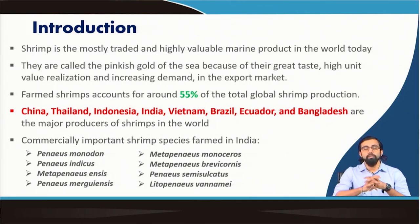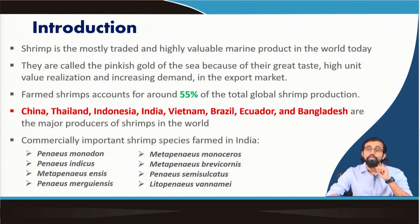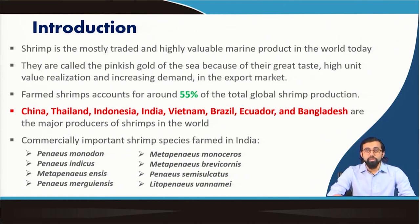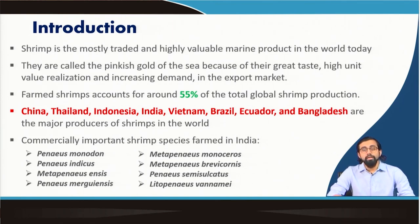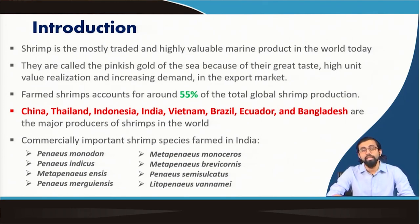Shrimp is one of the most traded and most valuable marine products in the world today. It is called the pinkish gold of the sea because of its great taste, its unit value realizations, and increasing demand all over the globe. Shrimp accounts for more than 55 percent of total global shrimp production, which is actually accounted for by farmed shrimp.